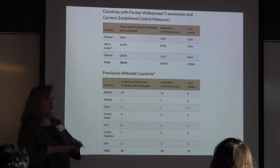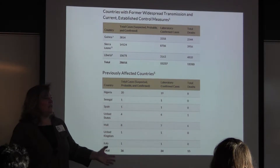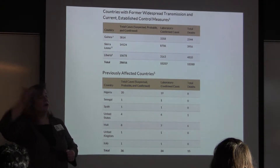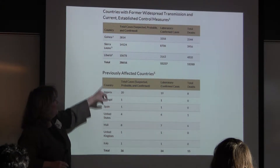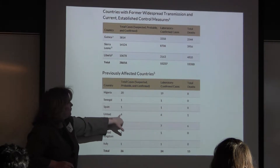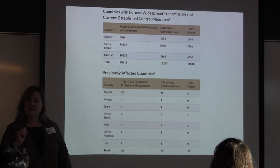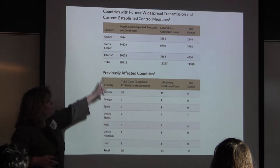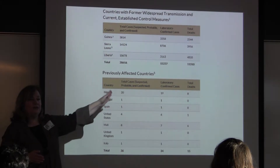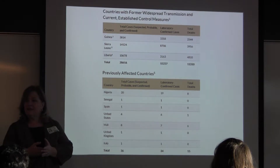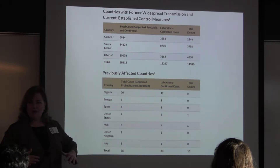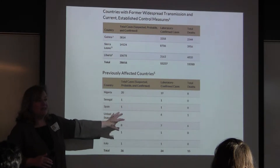For all of the screening that was done — not only in other countries before people came here, but here when they arrived — you can see in the United States there were only four probable, suspected, or confirmed cases, and only one death. Having good information, tracking the number of cases and deaths — that's how you know when the crisis is over and when you can stop all of those interventions.